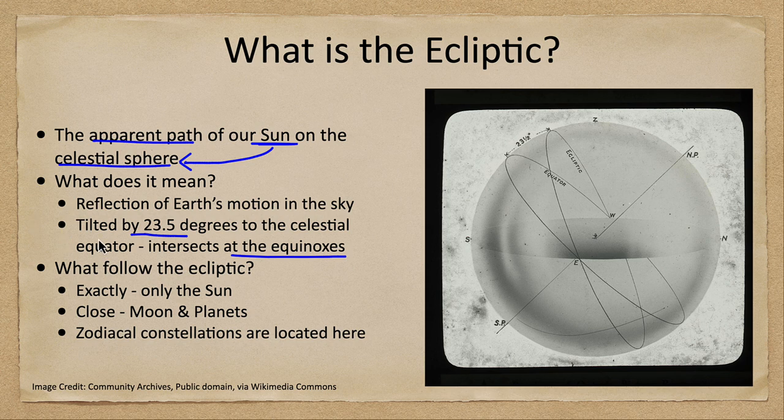Now when we look at the ecliptic, what are we seeing? We know that the Sun isn't really moving, so really we're seeing a reflection of Earth's motion around the Sun in the sky.